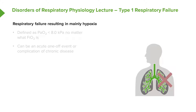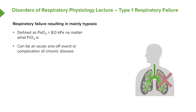Type 1 respiratory failure is respiratory failure with hypoxia alone — a normal PaCO2 but a PaO2 which is less than 8, no matter what the inspired oxygen concentration is. This is often an acute one-off event, but it can also be a complication of chronic lung diseases, largely COPD.